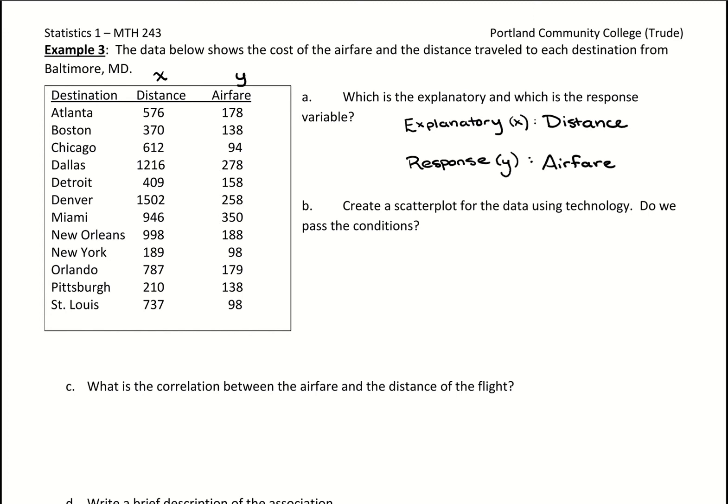So in part b, create a scatter plot for the data using technology. We're going to use GeoGebra. And do we pass the conditions? Which basically means is the data roughly linear? And are there any clear outliers or groupings that we need to be careful of?